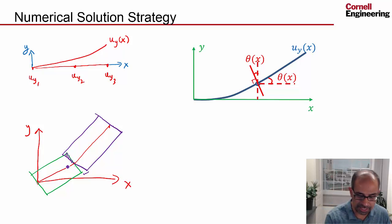And the way you do that is you not only calculate how much the point on the midline displaces in the y-direction, but you also calculate the slope or corresponding the rotation of the cross-section.